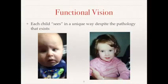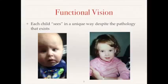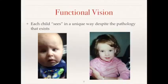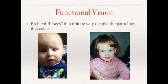Functional vision is the way each child uses vision to learn. This includes activities of daily life, near vision tasks, communication and interaction, movement and space. Despite similar diagnoses, each child sees differently, as in the case of these two children with optic nerve hypoplasia. The child on the left has normal vision function after strabismus surgery, and the other has visual field loss requiring cane travel for independence.